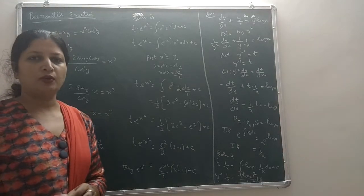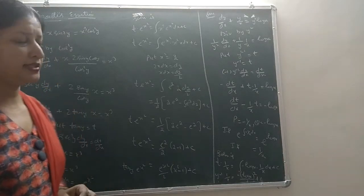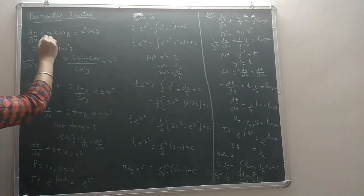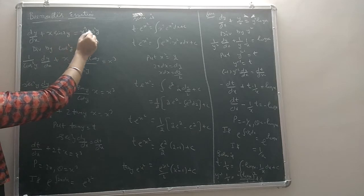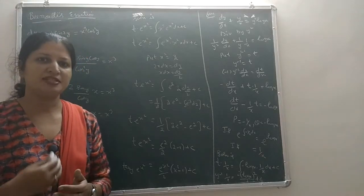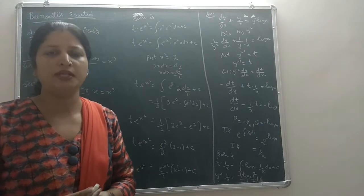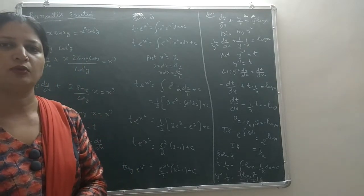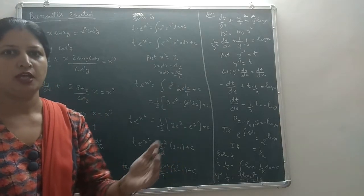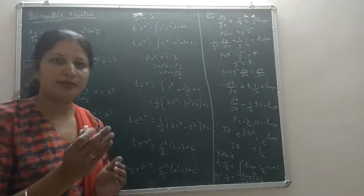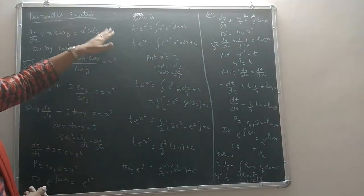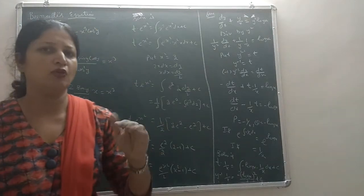The next question related to the Bernoulli equation is of the type dy/dx plus x·sin(2y) equals x³·cos²y. So the question is of the type dy/dx plus p·y equals Q, where p and Q are functions of x — terms on the right-hand side without y.